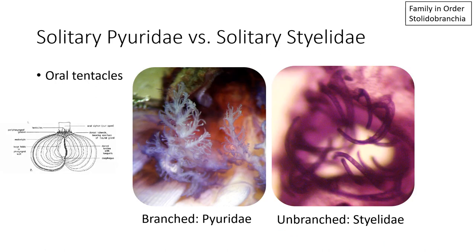How to tell the difference between solitary Pyridae versus solitary Styelidae in the order Stolidobranchia? An important characteristic is the oral tentacles, which surround the interior edge of the oral siphon and help the animal bring water into the body. If you dissect the animal — cut down the endostyle and open up the body — the oral tentacles will be just posterior to the oral siphon. In Pyridae, the oral tentacles are branching, as shown in the picture on the left. In Styelidae, they are unbranched — just a single line, as shown in the picture on the right.